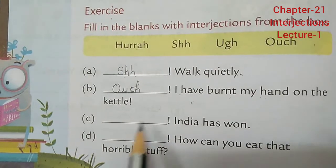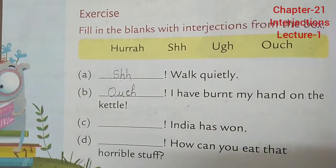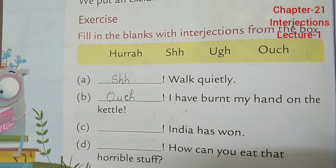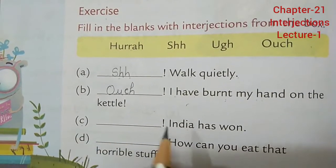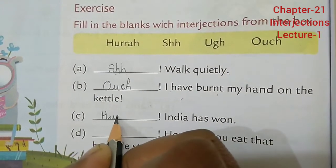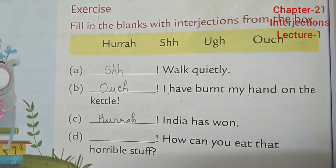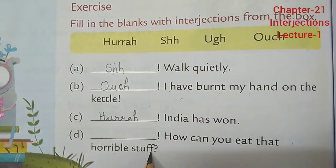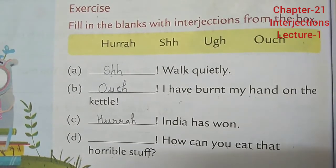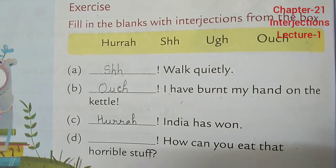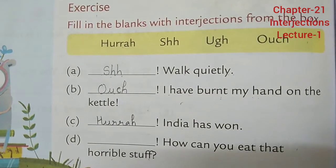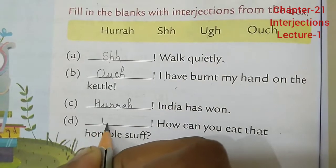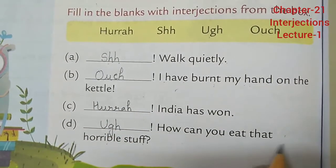Now (c): Blank — India has won. When you win a match or game, you say 'hurrah!' So: 'Hurrah! India has won.' Now (d): Blank — How can you eat that horrible stuff? Disgust means something bad, dirty, or not good. For disgust, we say 'ugh!' So: 'Ugh! How can you eat that horrible stuff?'